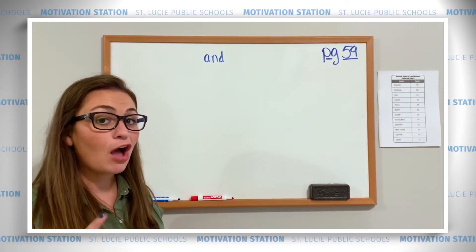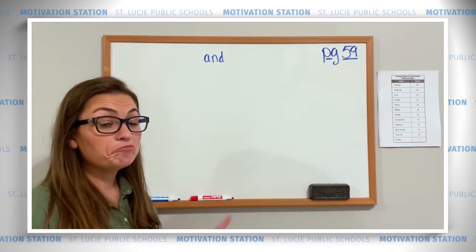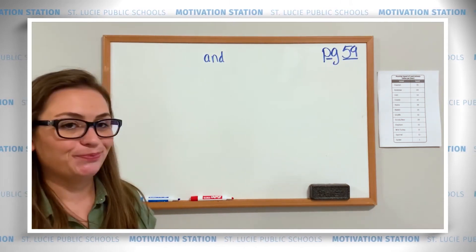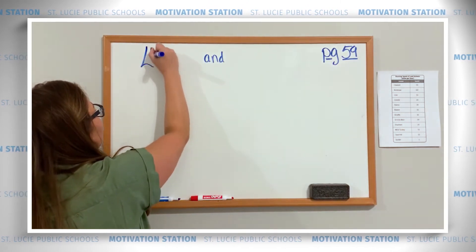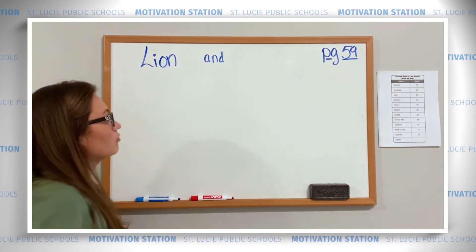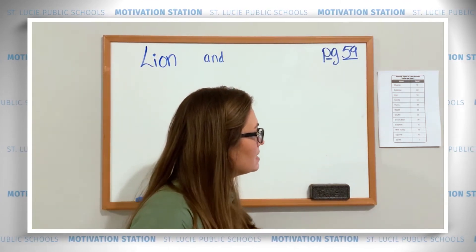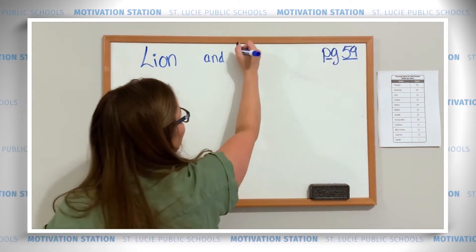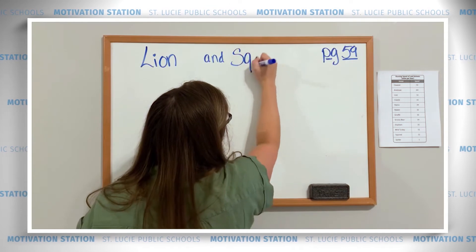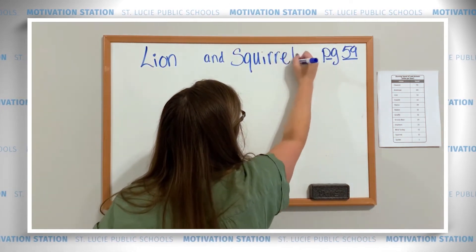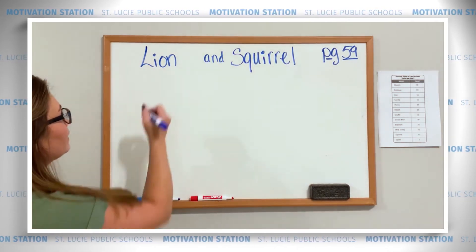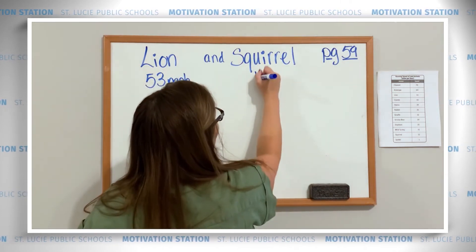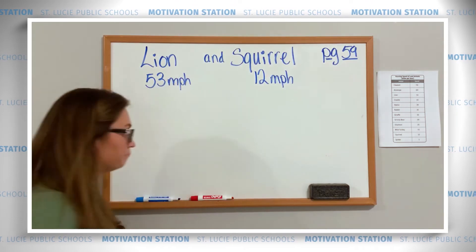Now we get to choose our own. I'm going to do one up here — you can do the same one as me, or you can pick two different animals on your own. Let's do a lion; I always think lions are cool with their roars and their manes. And let's do a squirrel — lion and a squirrel. The lion goes 53 miles per hour and the squirrel goes 12 miles per hour.